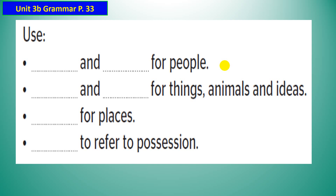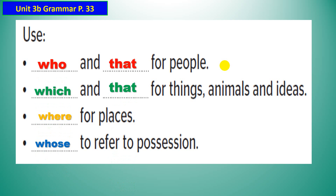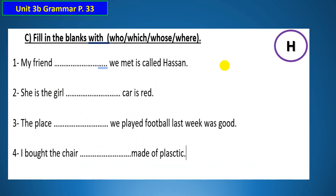Here is the structure for relative clauses. I use 'who' and 'that' for people. I use 'which' and 'that' for things, animals, and ideas. I use 'where' for places. I use 'whose' to refer to possession. This is a quick revision.